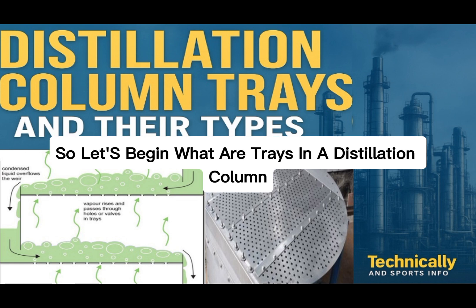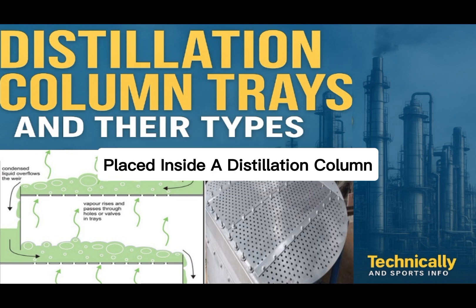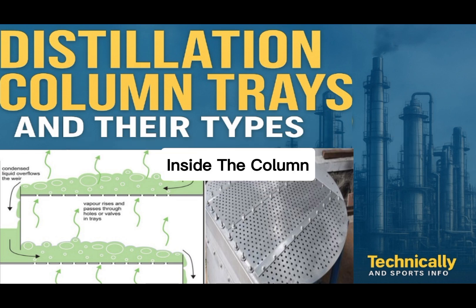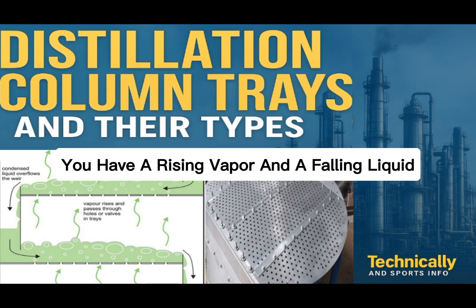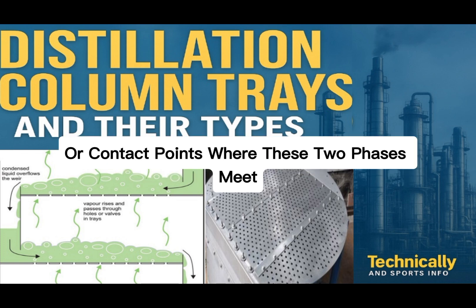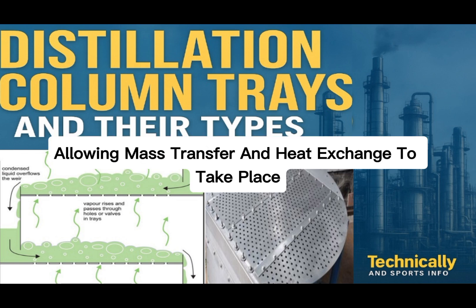What are trays in a distillation column? In simple words, trays are the internal components placed inside a distillation column to help separate liquid and vapor mixtures efficiently. Inside the column, you have a rising vapor and a falling liquid. The trays create stages or contact points where these two phases meet — vapor going up and liquid going down — allowing mass transfer and heat exchange to take place.